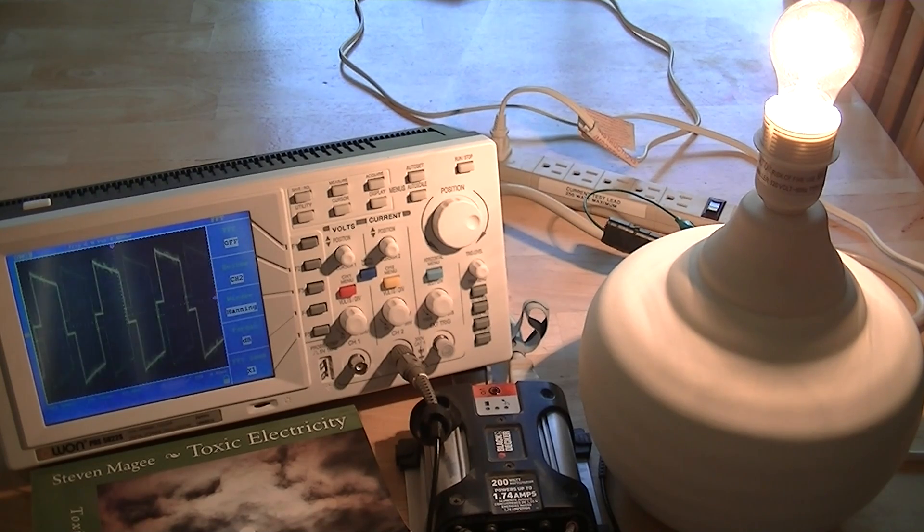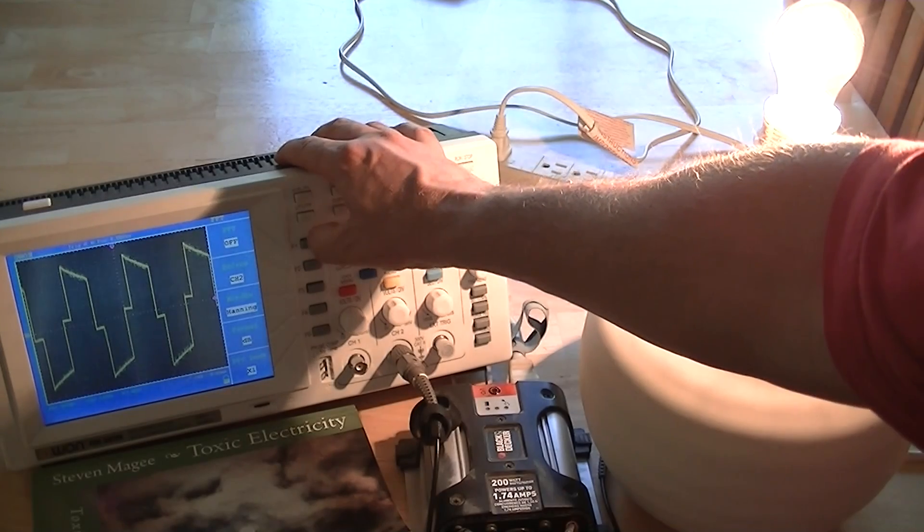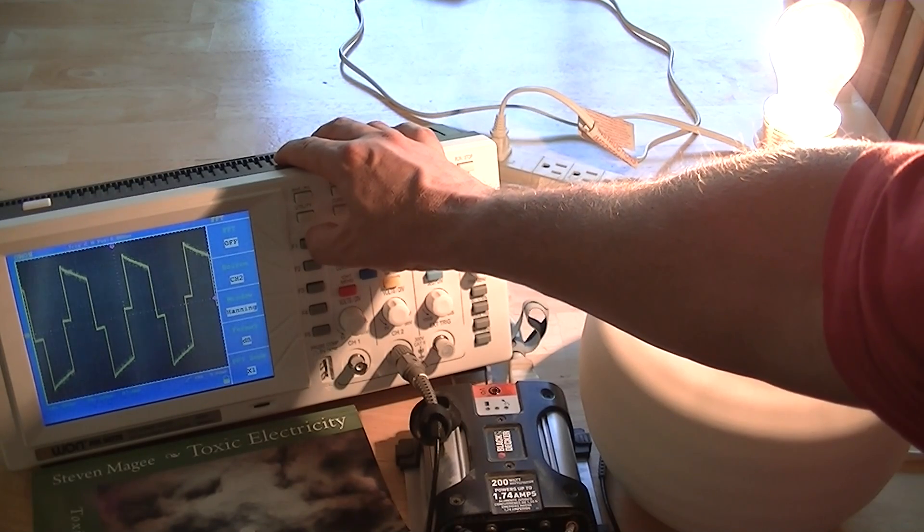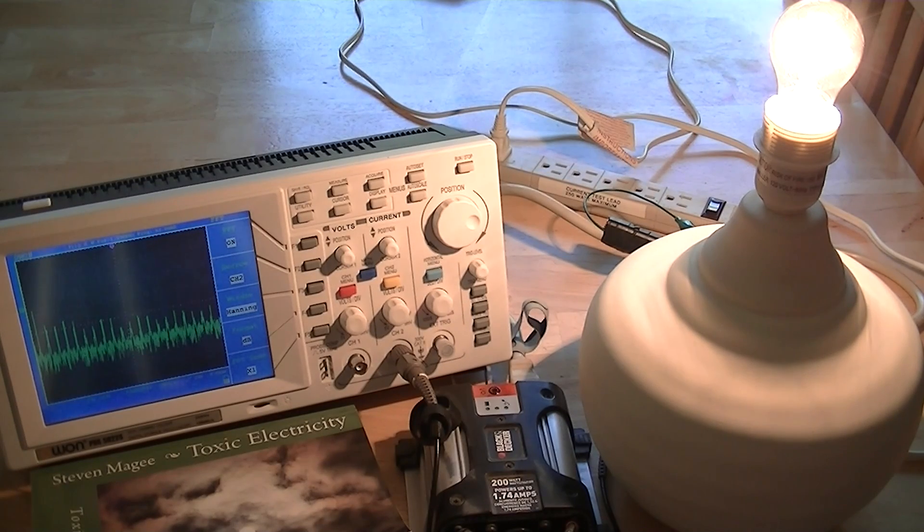I'm going to show you the frequencies that are on the system using a function called the fast Fourier transform function. So I'm going to switch that on and as you can see we have a lot of harmonics.